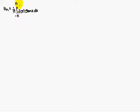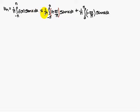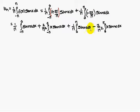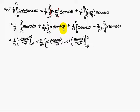Similarly, bₙ is equal to 1 by pi integral minus pi to pi f of x sin nx dx. That is 1 by pi: for minus pi to 0, function is 1 plus 2x by pi times sin nx dx; for 0 to pi, function is 1 minus 2x by pi times sin nx dx. Expanding: 1 by pi integral of sin nx, plus 2 by pi squared integral from minus pi to 0 of x sin nx dx, and similarly for the second interval.